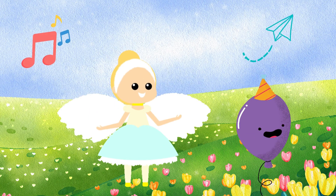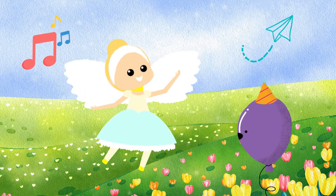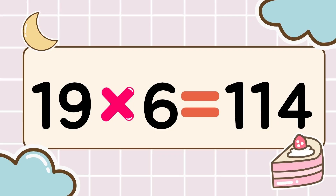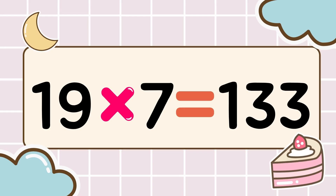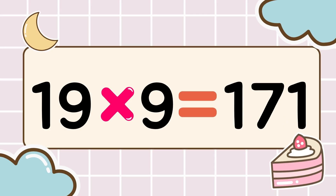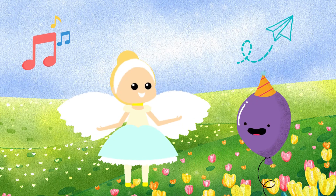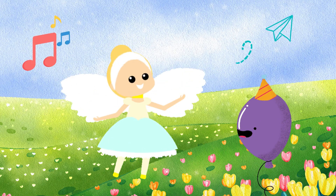You did it perfectly so far! Multiplication mode stays on! Let's go to the next level! 19 times 6 is 114, 19 times 7 is 133, 19 times 8 is 152, 19 times 9 is 171. Learning times tables is so fun! We are fun, study, fun!